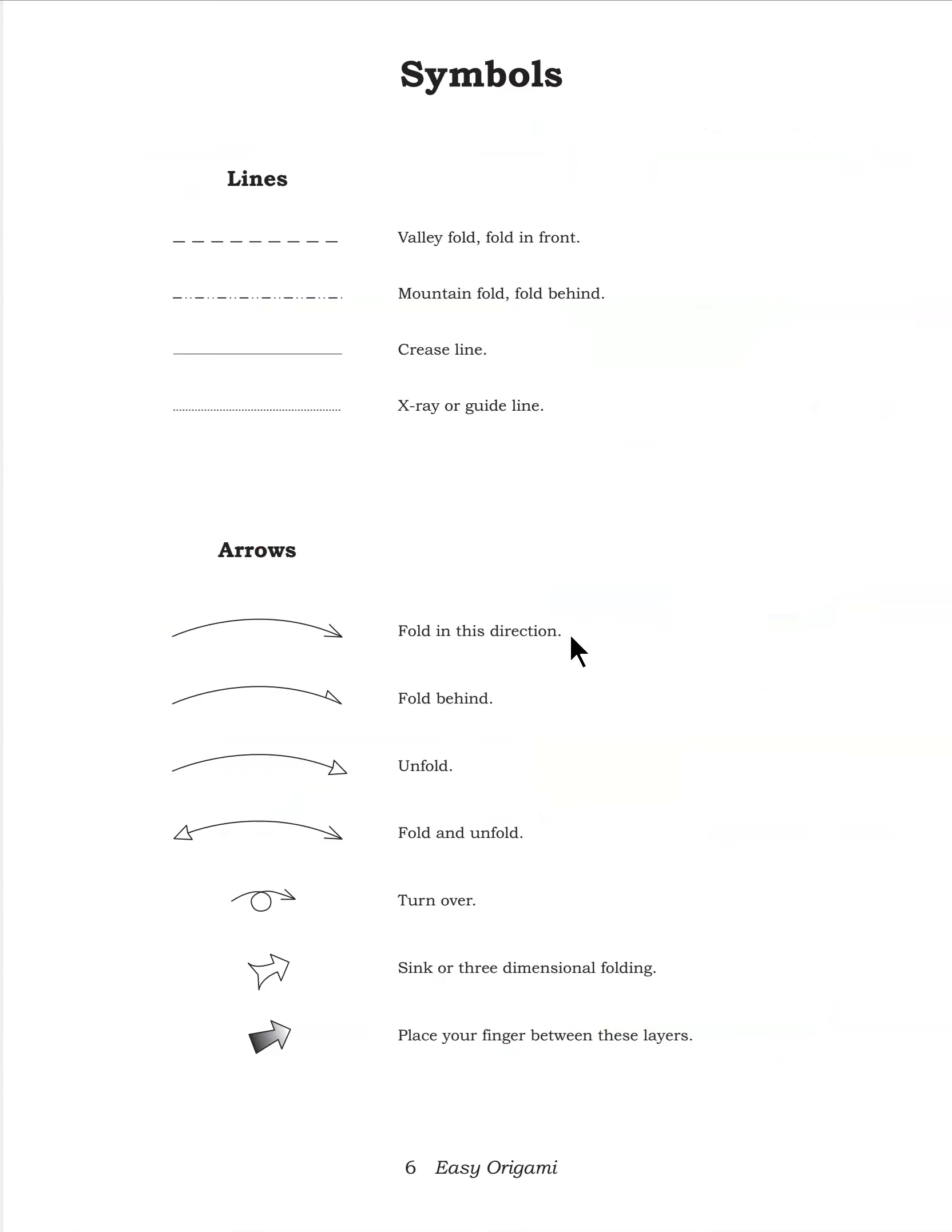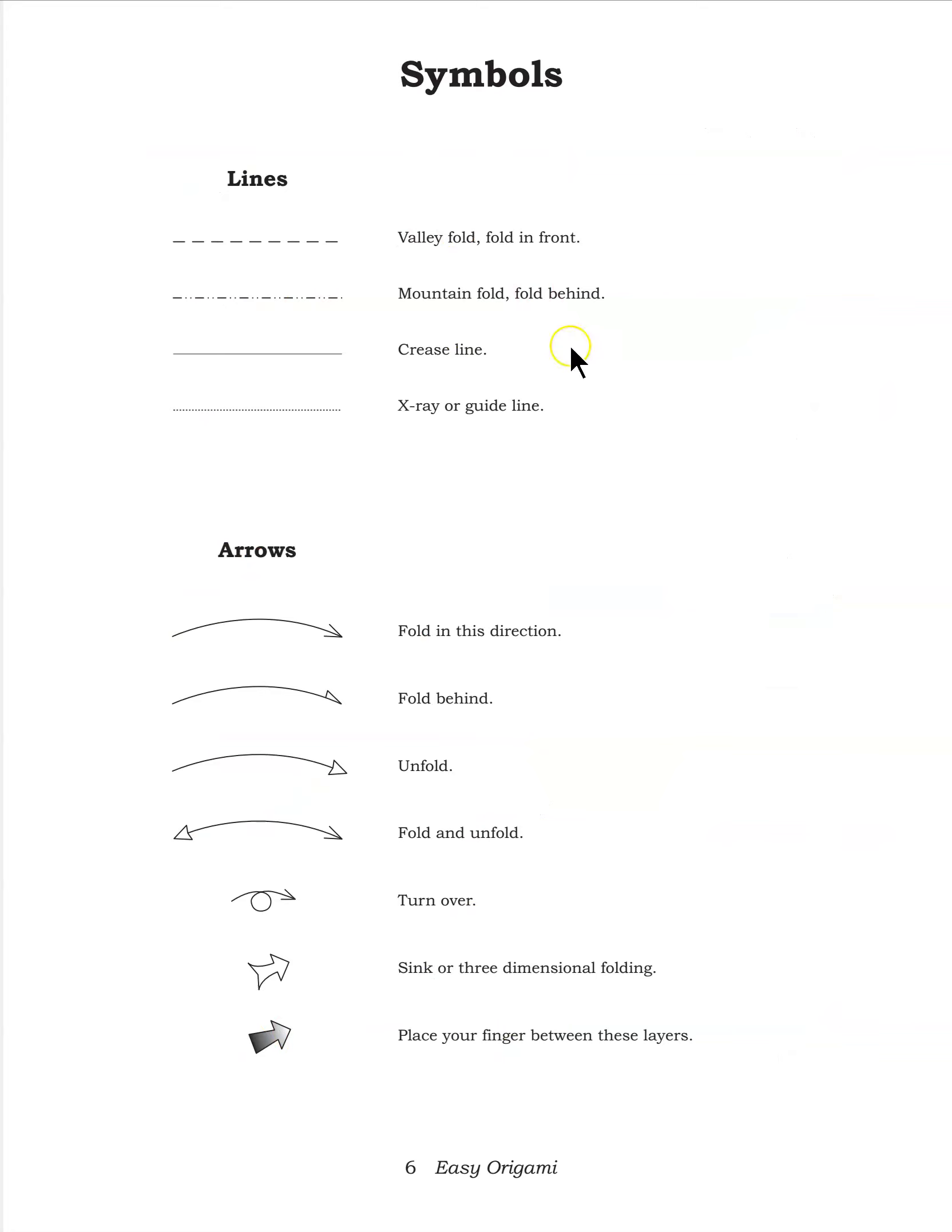These are the types of what these things mean, so if you're not sure you can see that this means you fold to the front, you fold to the back, you just make a crease or line. And this is a guideline to show you, this is not a fold you're going to make.